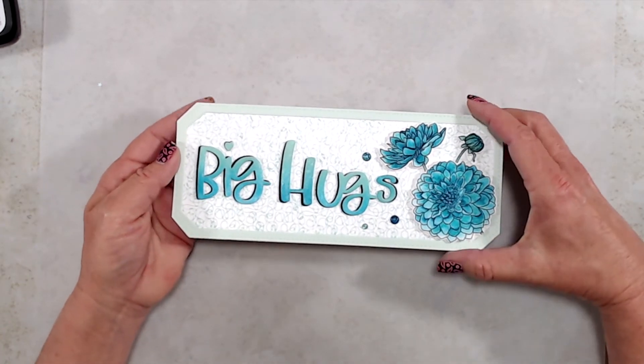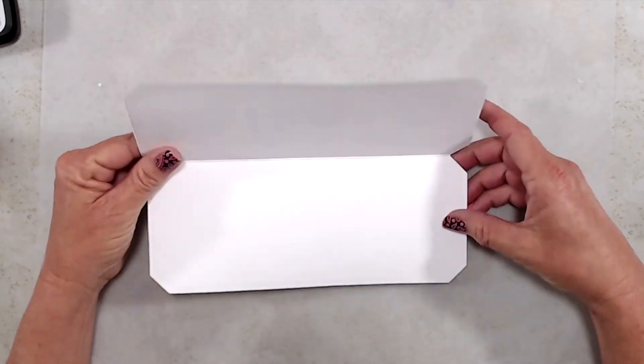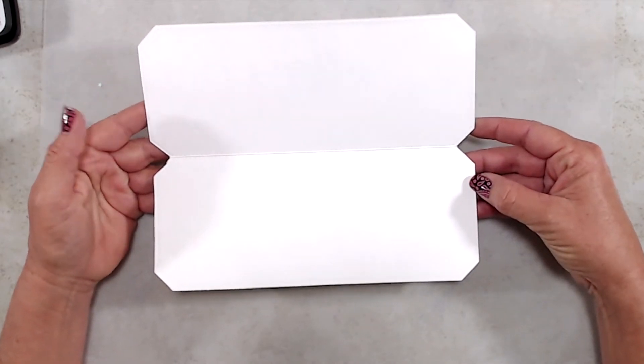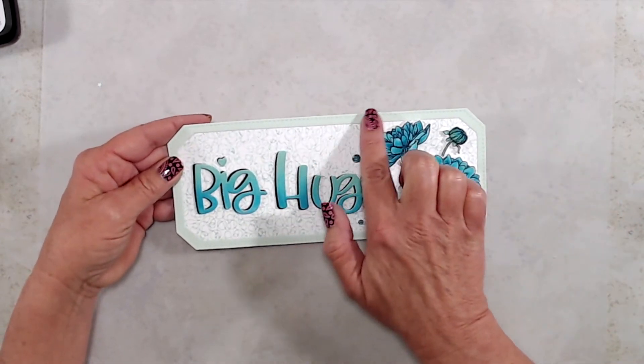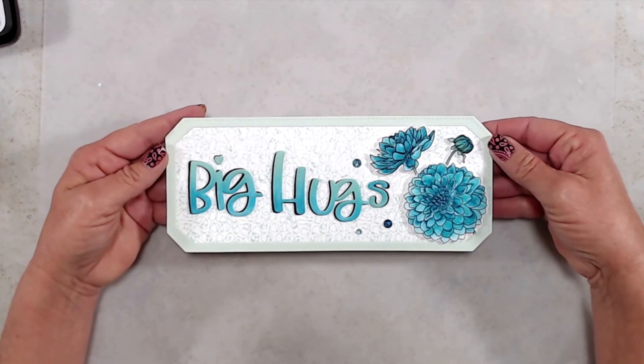And for my final card, I decided to make a shaped card using the dies. And I also created a frame to go around the outer edge using the largest die and the second largest die to frame in my stamped image and my die cut words. And that's it. That wraps up this reveal video.